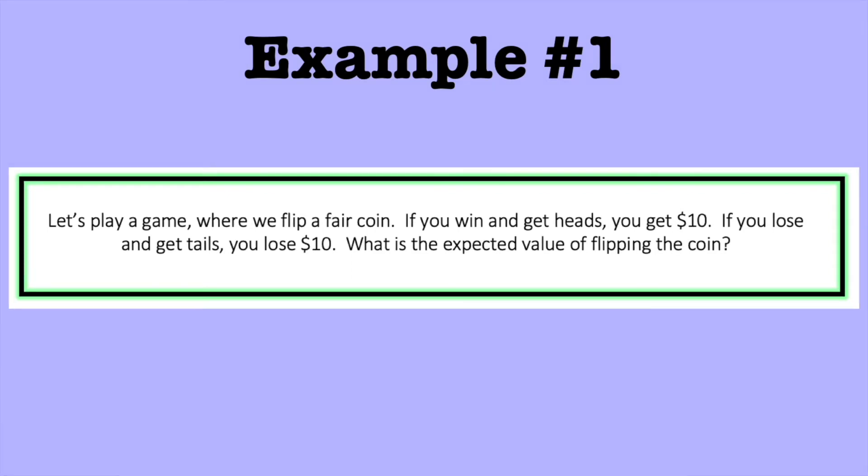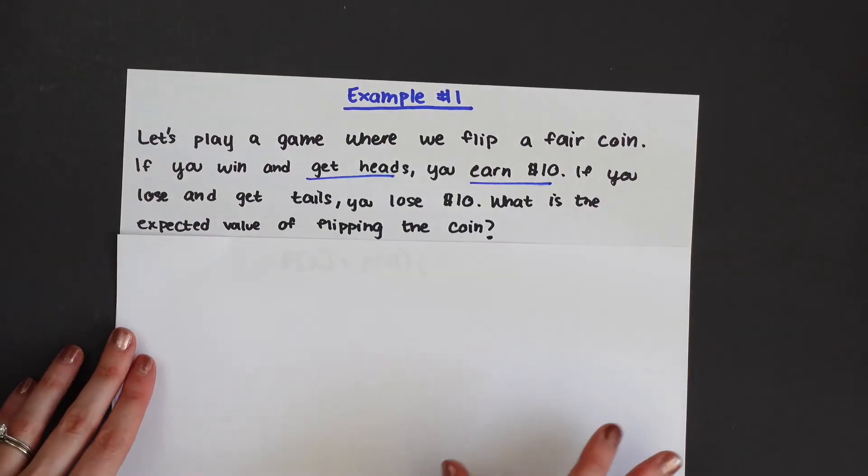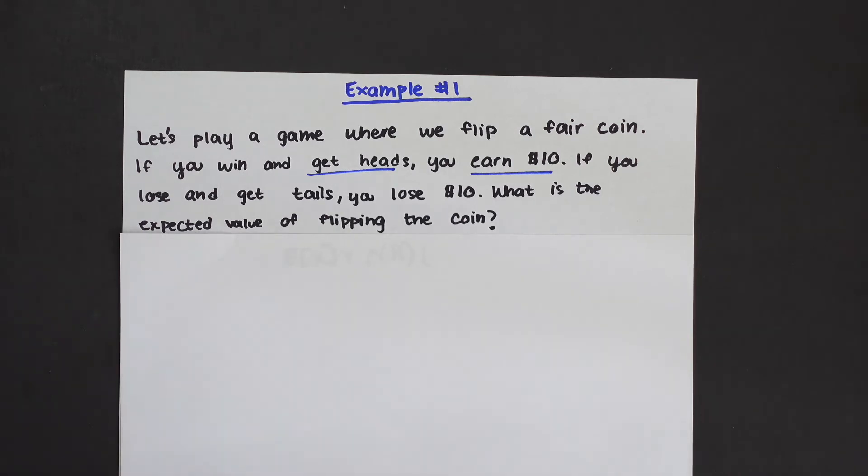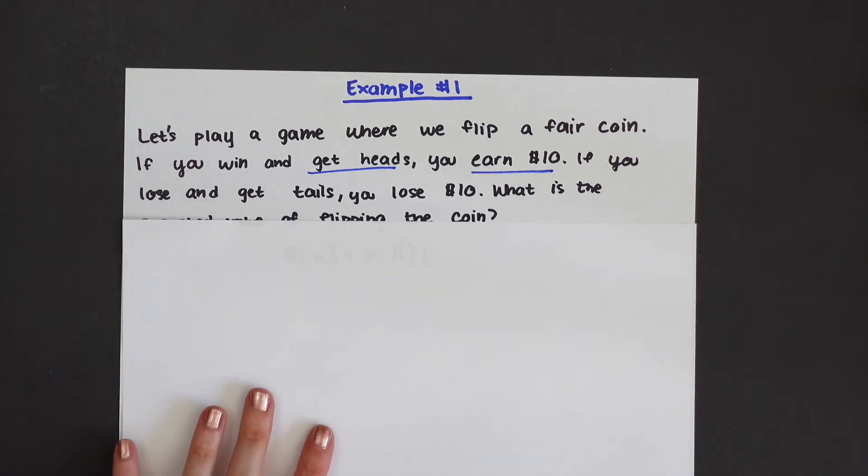Let's play a game where we flip a fair coin. If you win and get heads you earn ten dollars, and if you lose and get tails you lose ten dollars. We need to find what the expected value of flipping this coin is. Before we do anything and fill in our formula let's first write out our probability distribution of this question here.